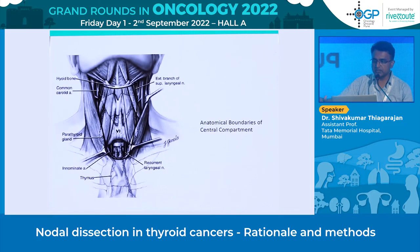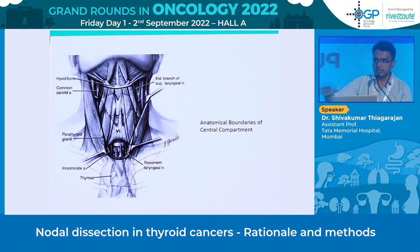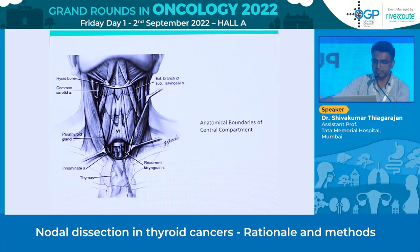Coming on to the boundaries: superiorly the boundary is the hyoid bone, inferiorly the innominate artery, and laterally on either side is the common carotid artery. This is by and large the boundary of the central compartment. You have the central compartment on the right and left side, with the pre-laryngeal node above the cricoid and lower down up to the innominate vessels.